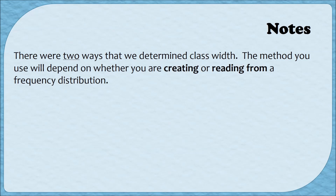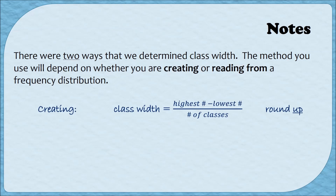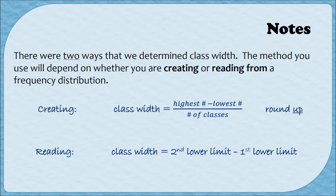Before we end, one quick comment about the class width. There were two different ways we found it, and the method you use depends on what you're doing. When creating a frequency distribution, you use the formula: (highest − lowest) / number of classes, rounding up if you get a decimal. When reading from an existing frequency distribution, you use the simpler method of subtracting the first two lower limits.